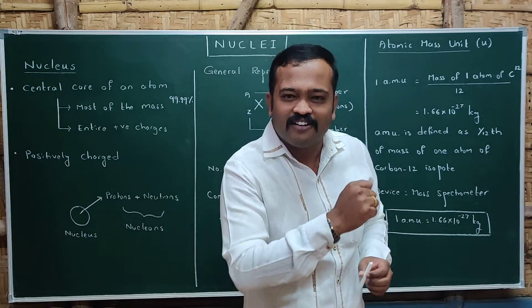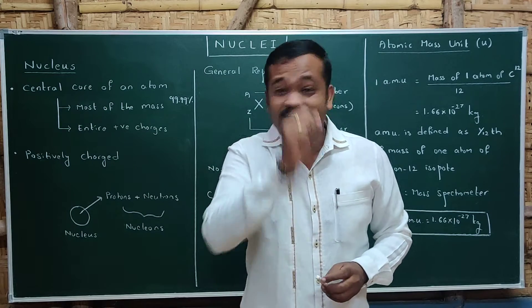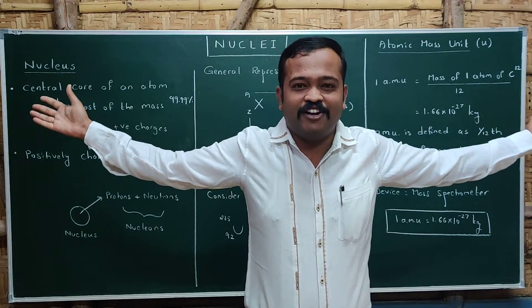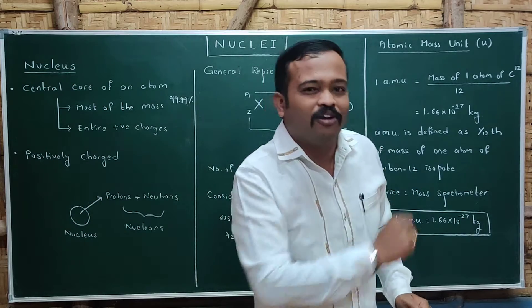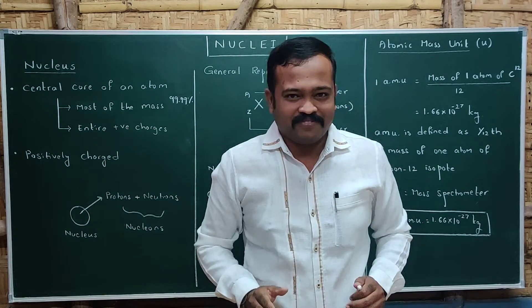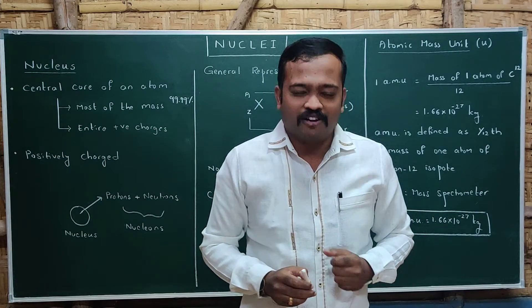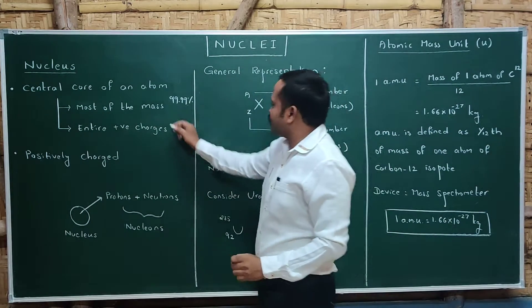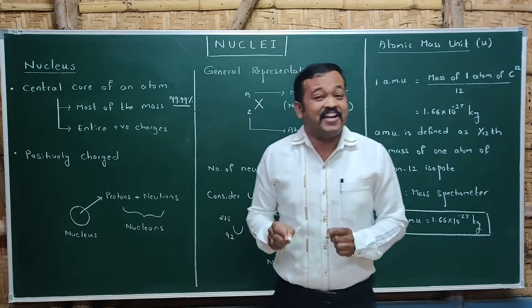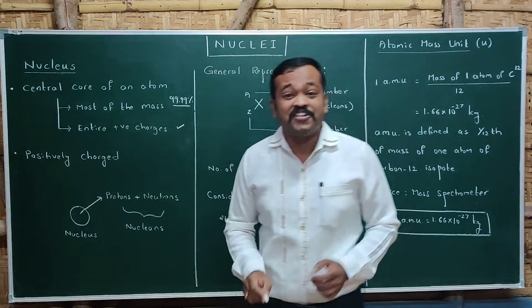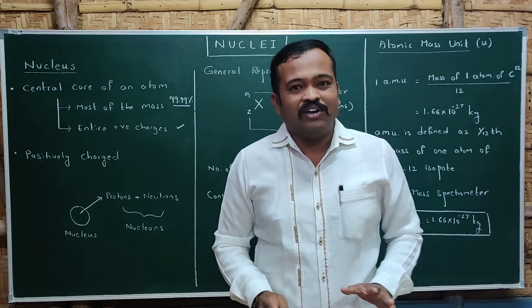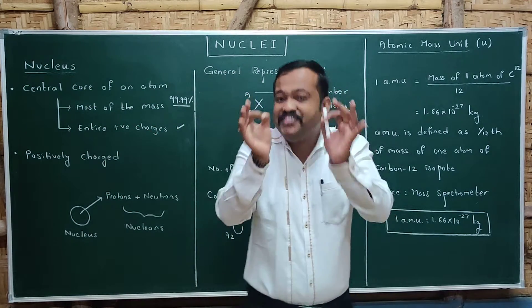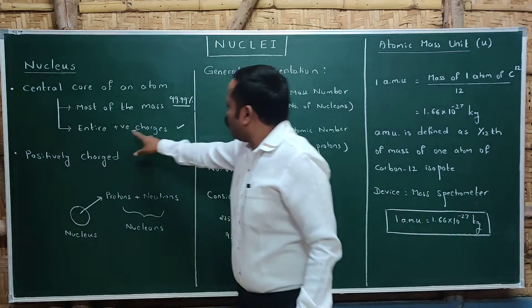Because of these reasons, we need to study about the nucleus. The nucleus is present inside an atom. If we consider the atom as the size of a cricket stadium, the nucleus is the size of a cricket ball — that is how small it is. The nucleus is at the center core of the atom, and it consists of 99.99% of the mass. The entire positive charges are present inside the nucleus itself.